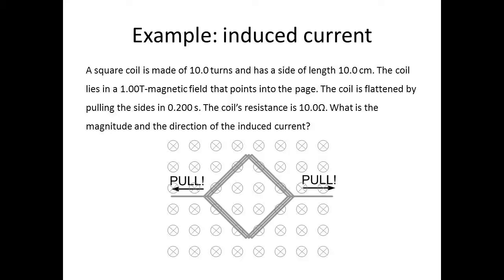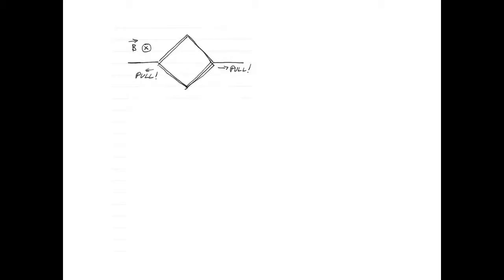The coil is flattened by pulling the sides in 0.2 seconds. The coil's resistance is 10 ohms. What is the magnitude and the direction of the induced current?